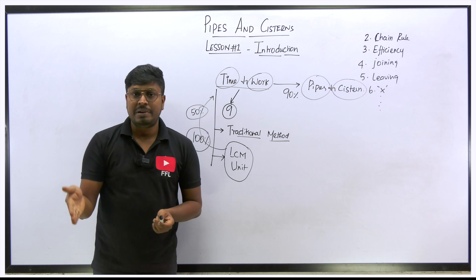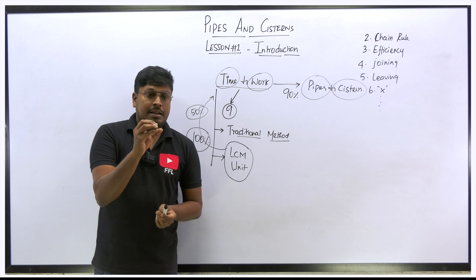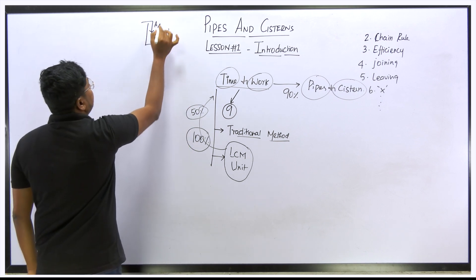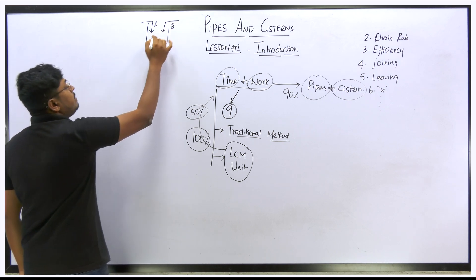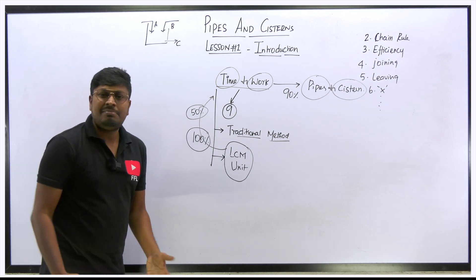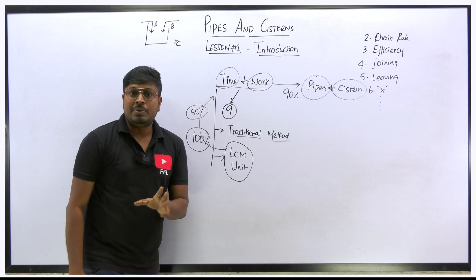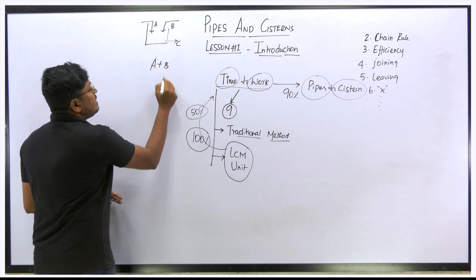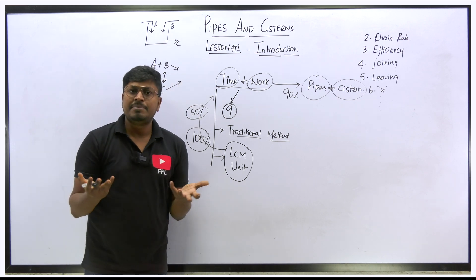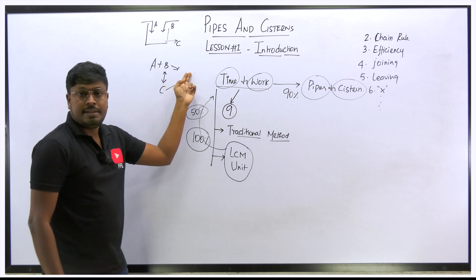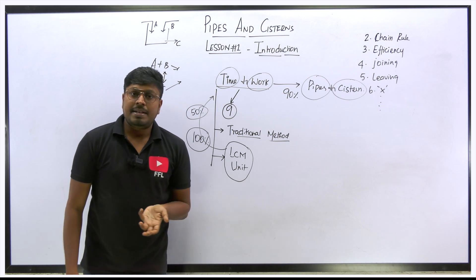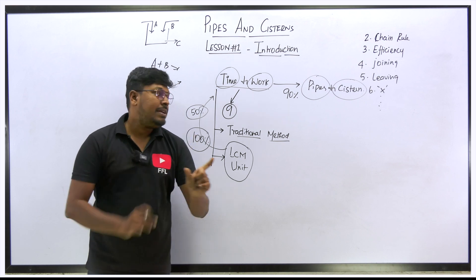Similarly, the X person/Y person concept becomes X tap/Y tap. One important concept in Pipes and Cisterns is when two taps fill a cistern and a third tap is emptying it. For example, Tap A and Tap B are filling the tank while Tap C is emptying it. The same concept in Time and Work is two persons constructing a building while a third person is demolishing it. The concepts, logic, and solving procedures are exactly the same.